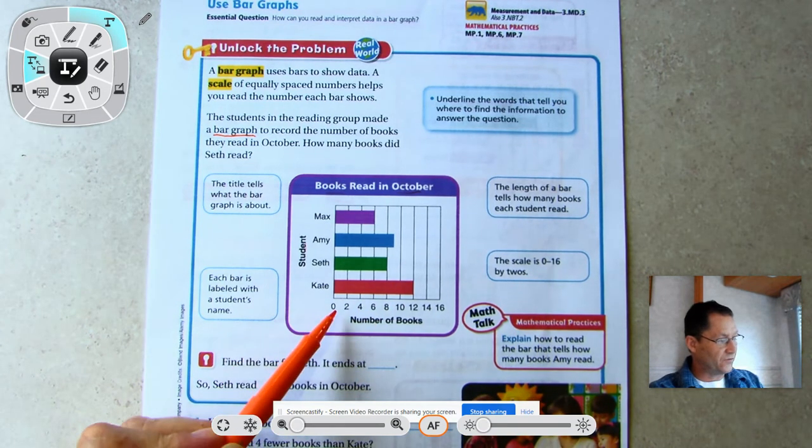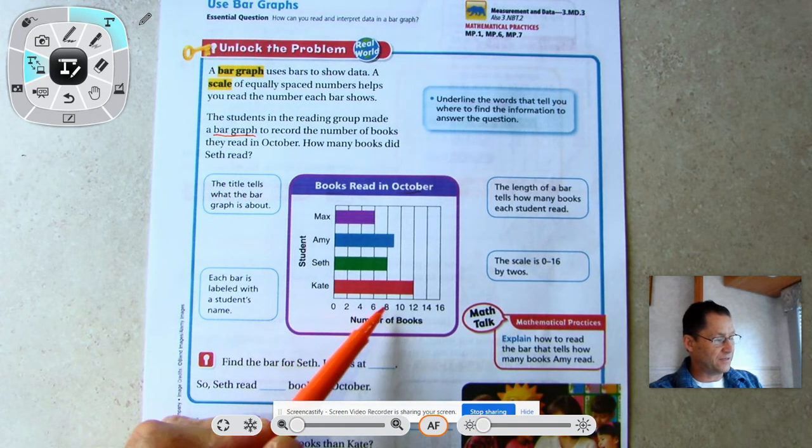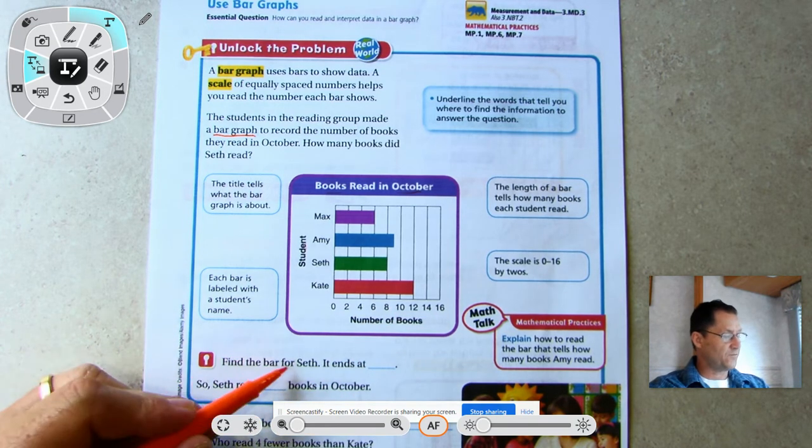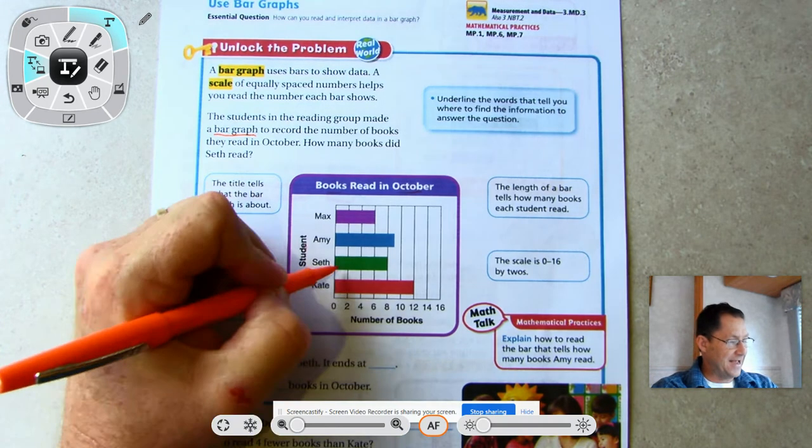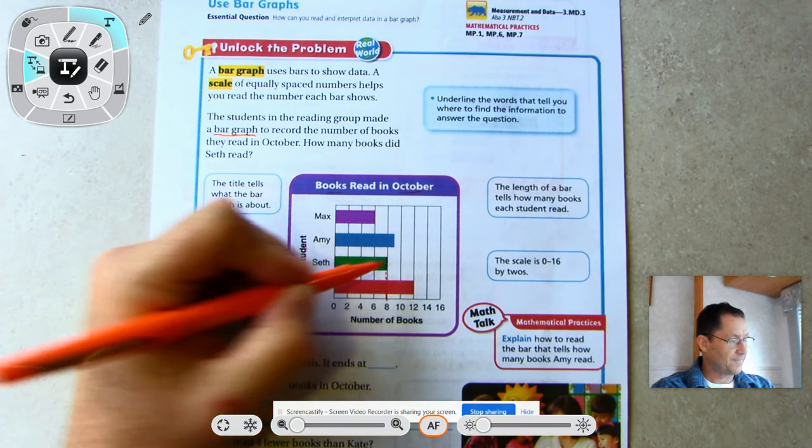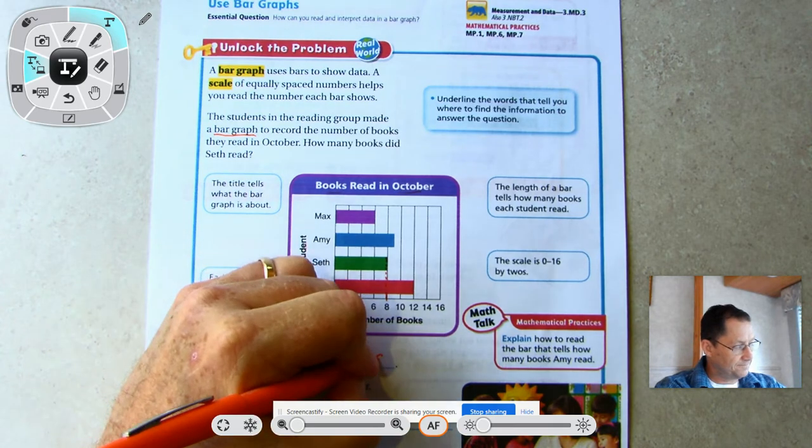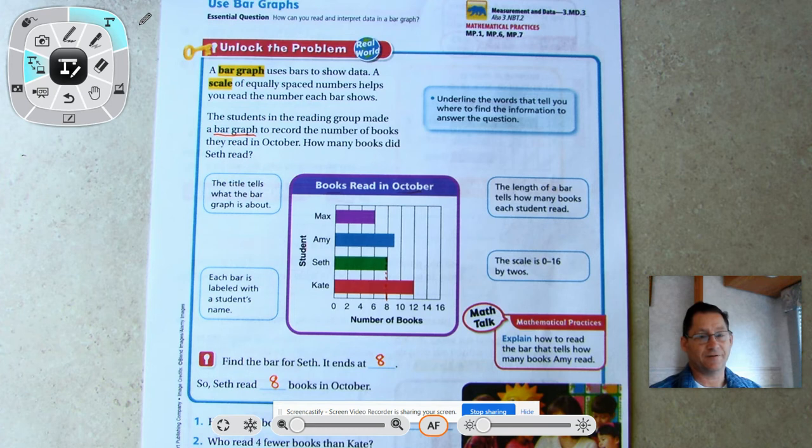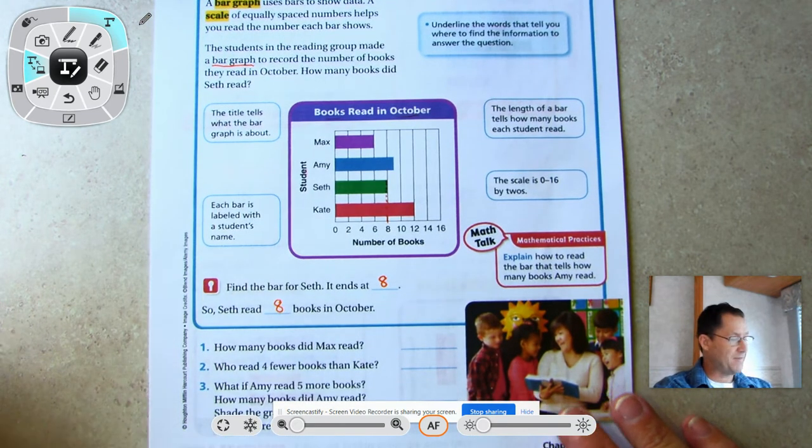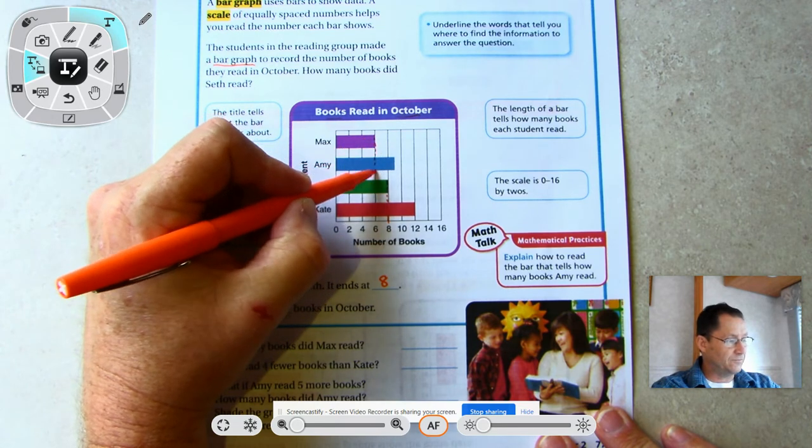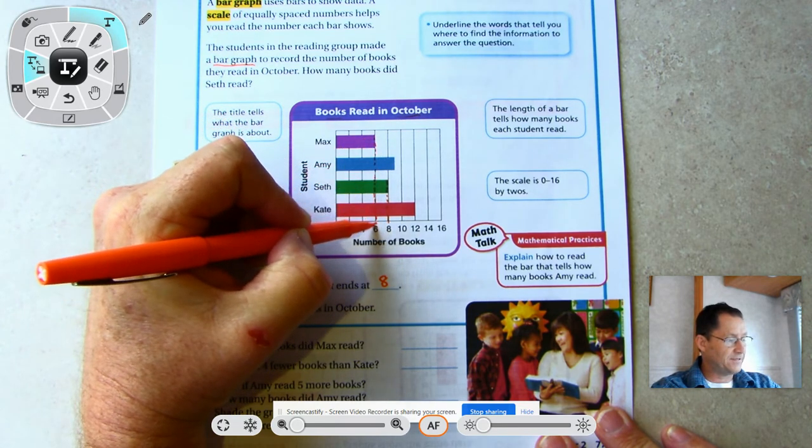The scale is 0 to 16 counting by 2's, so each gap is worth two. Find the bar for Seth - it ends at eight, so Seth read eight books in October.